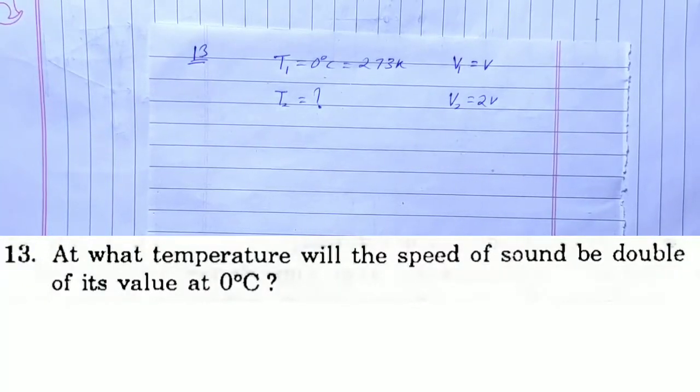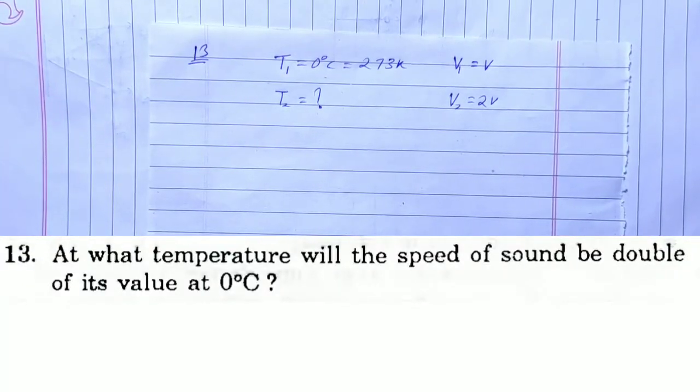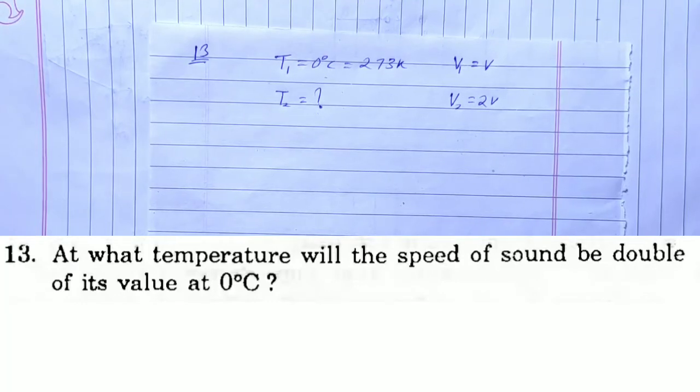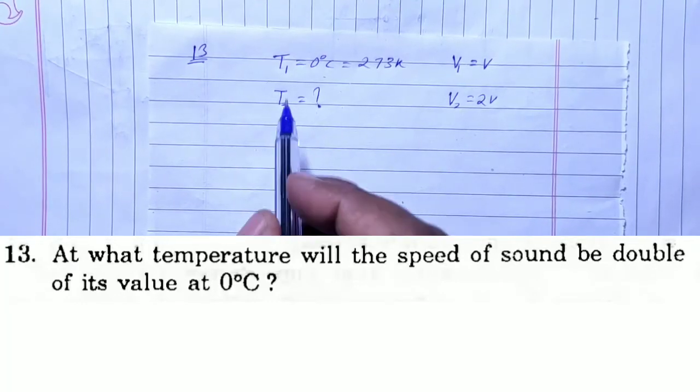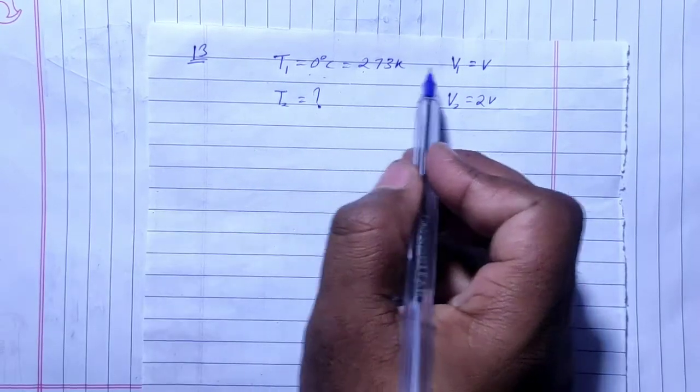SC Verma solution chapter 16 sound wave question number 13. At what temperature will the speed of sound be double of its value at 0 degree Celsius? If temperature is 0 degree Celsius, which is 273 Kelvin, then the velocity is v1.